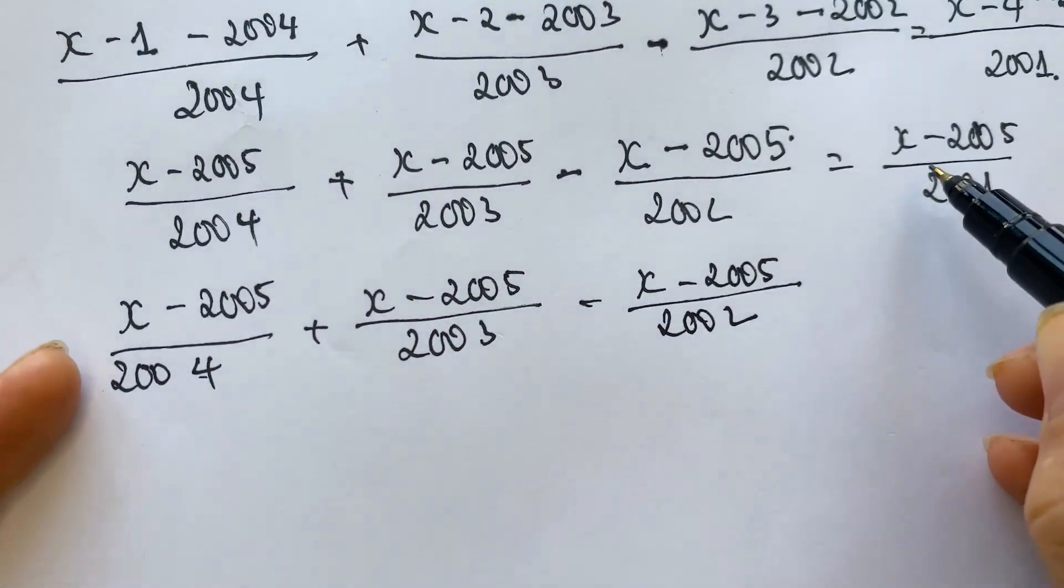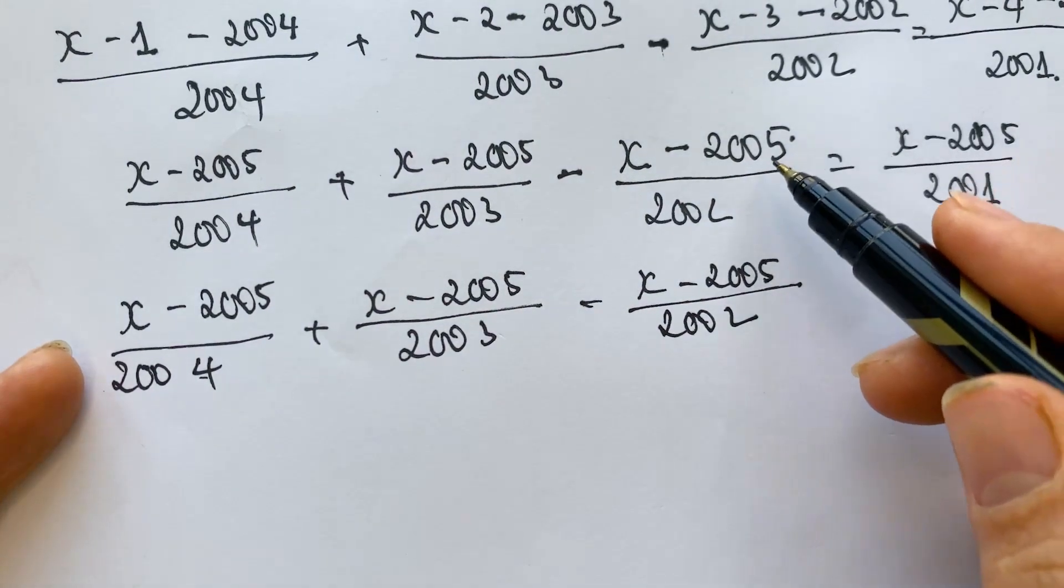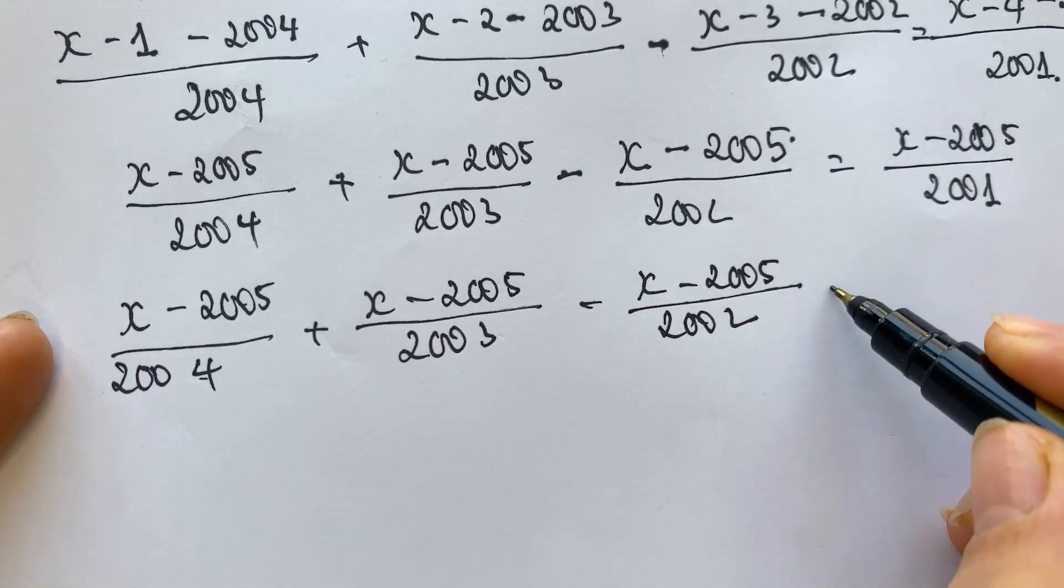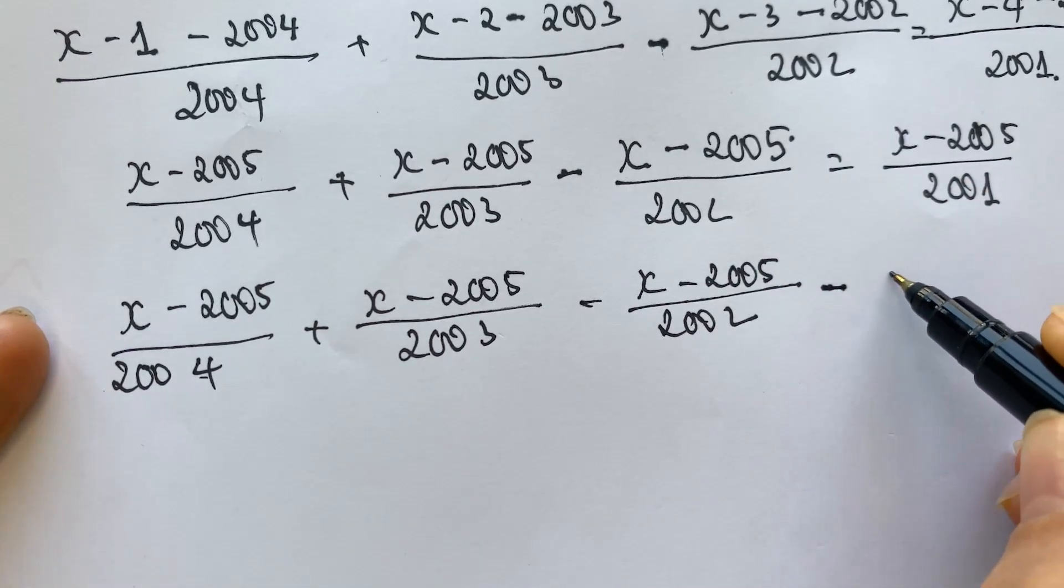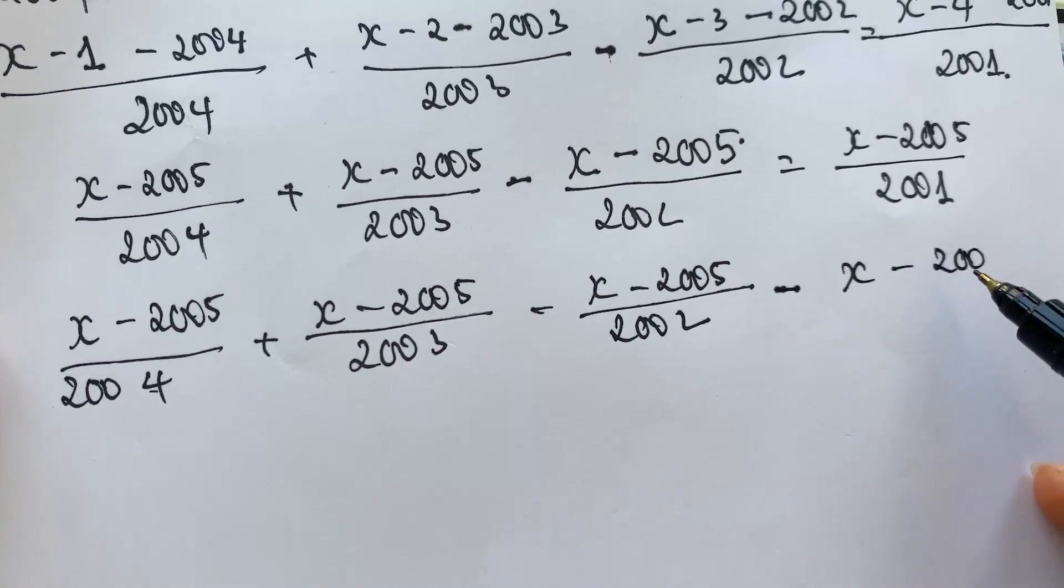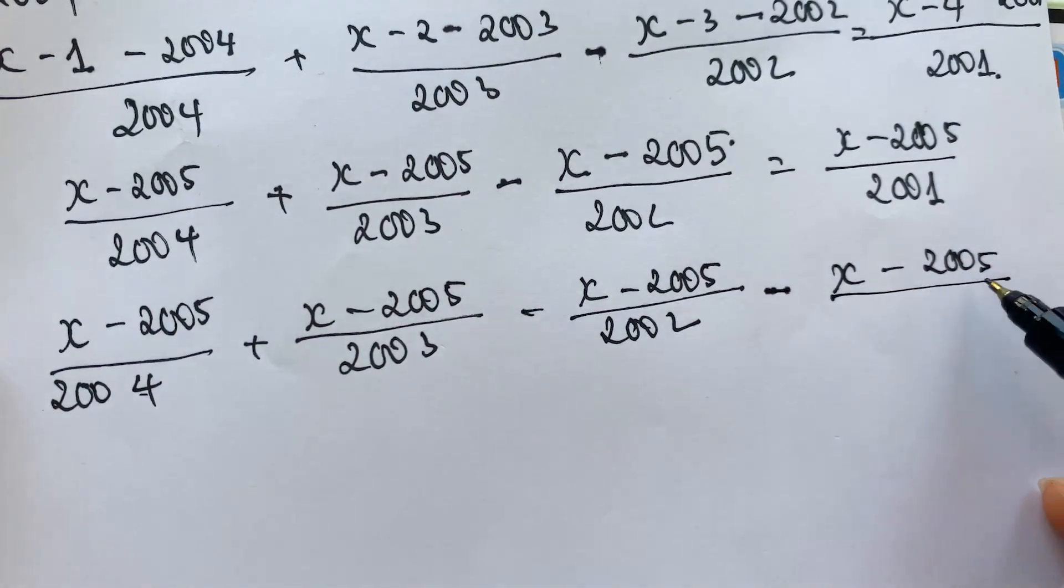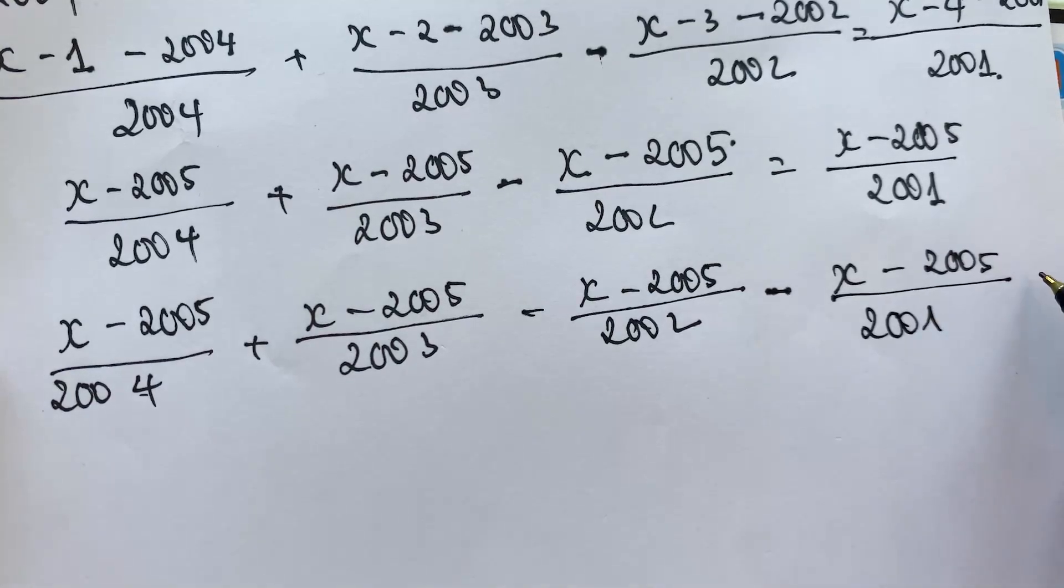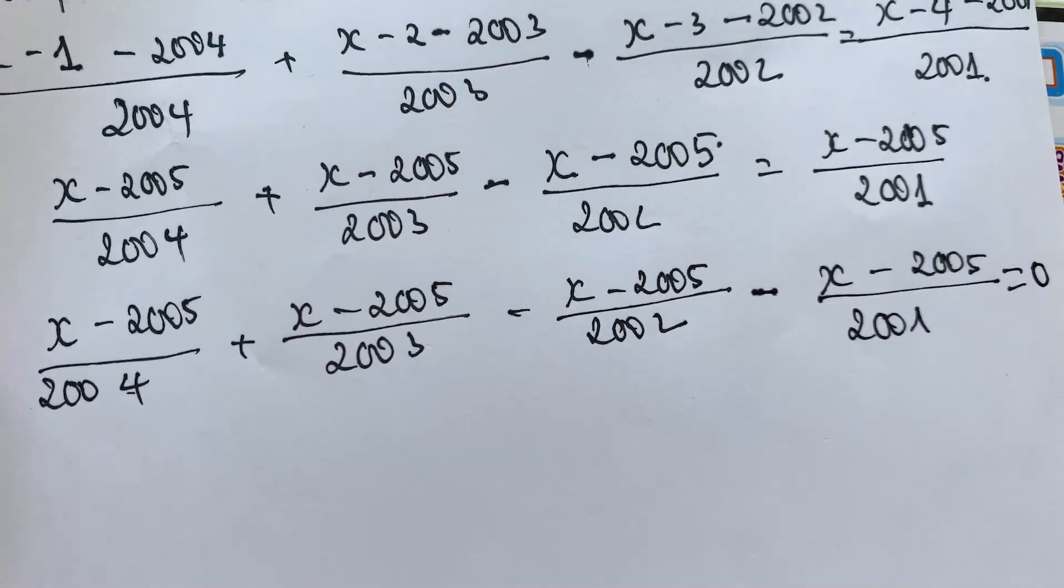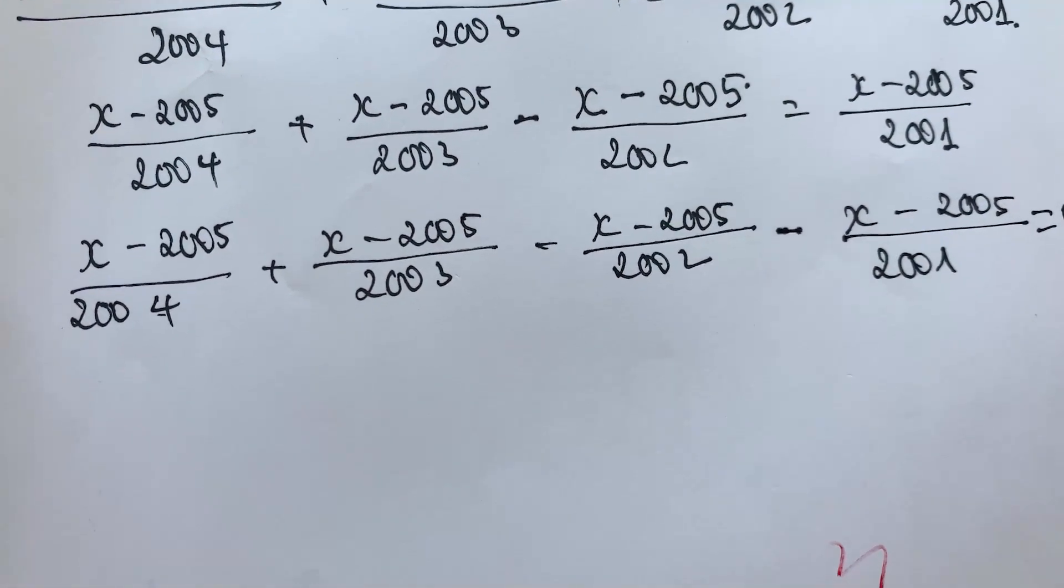So you need to move it to the left-hand side. On the right-hand side, we need to change the sign, x minus 2005 over 2001, it equals 0, right? Equals to 0.